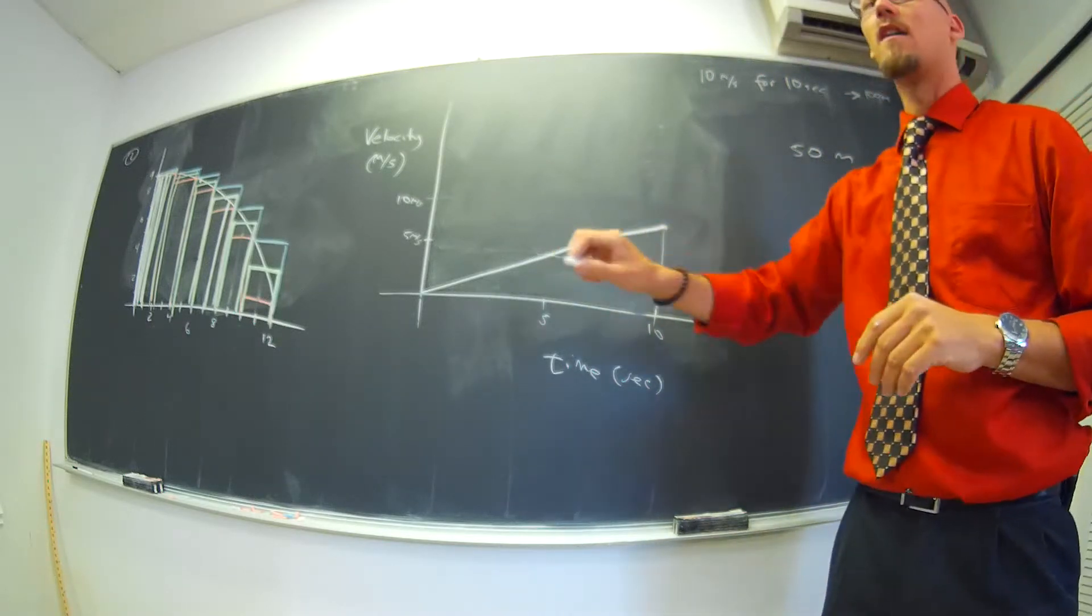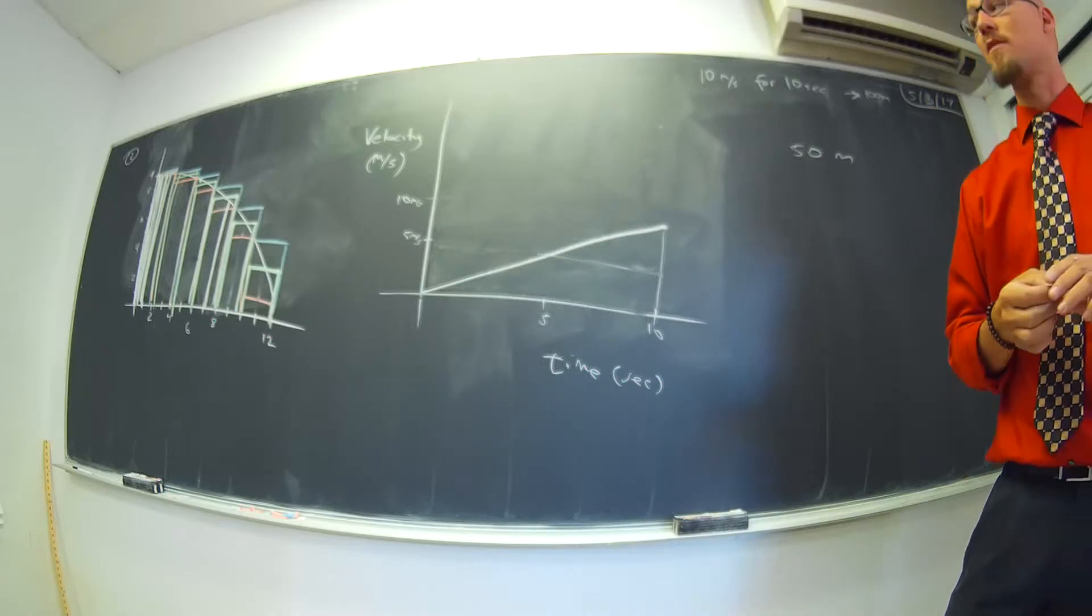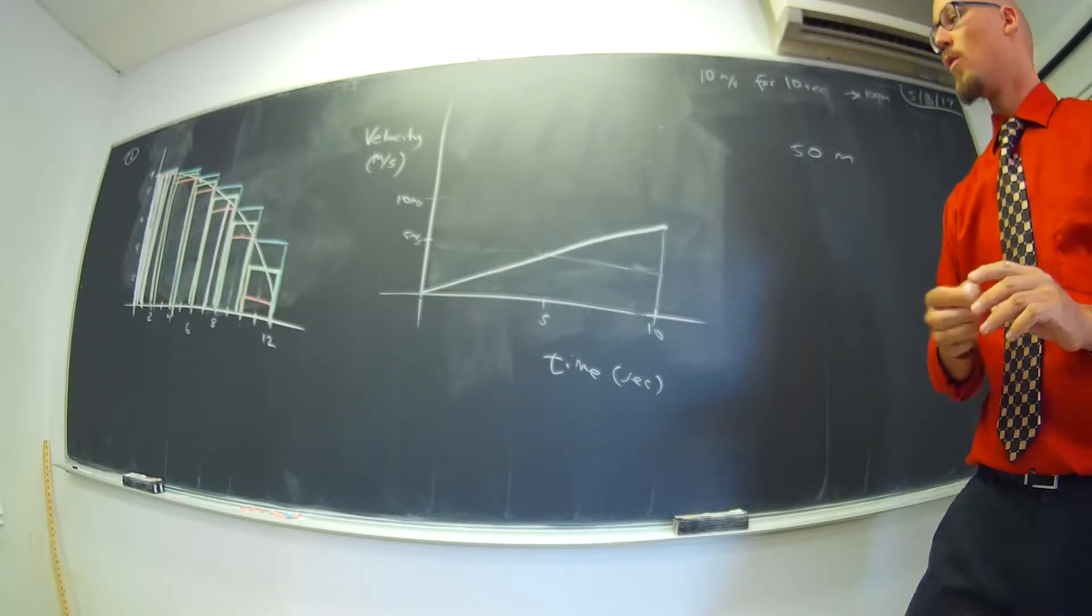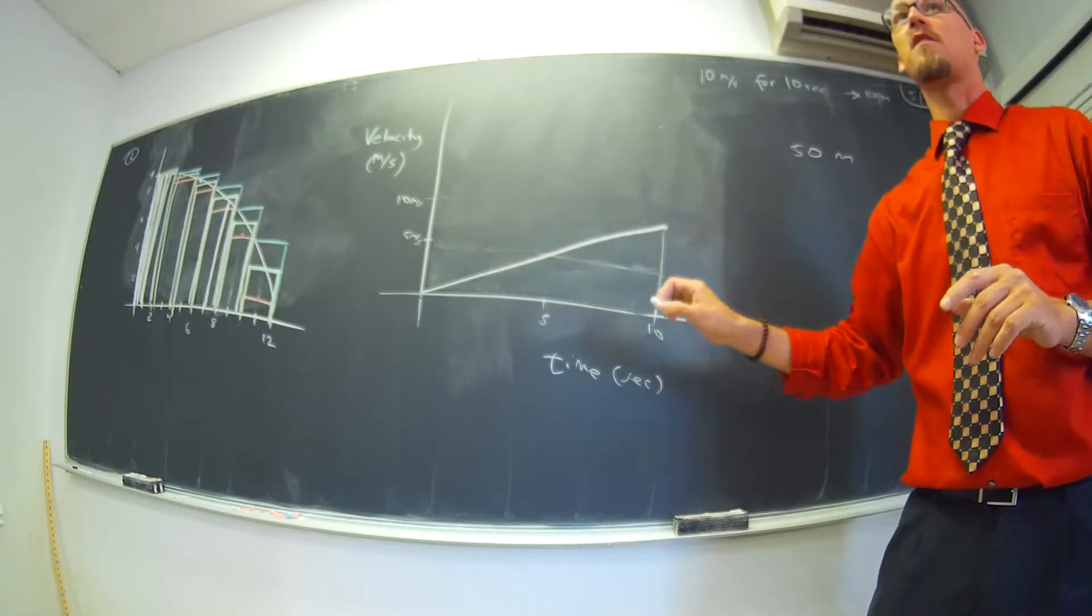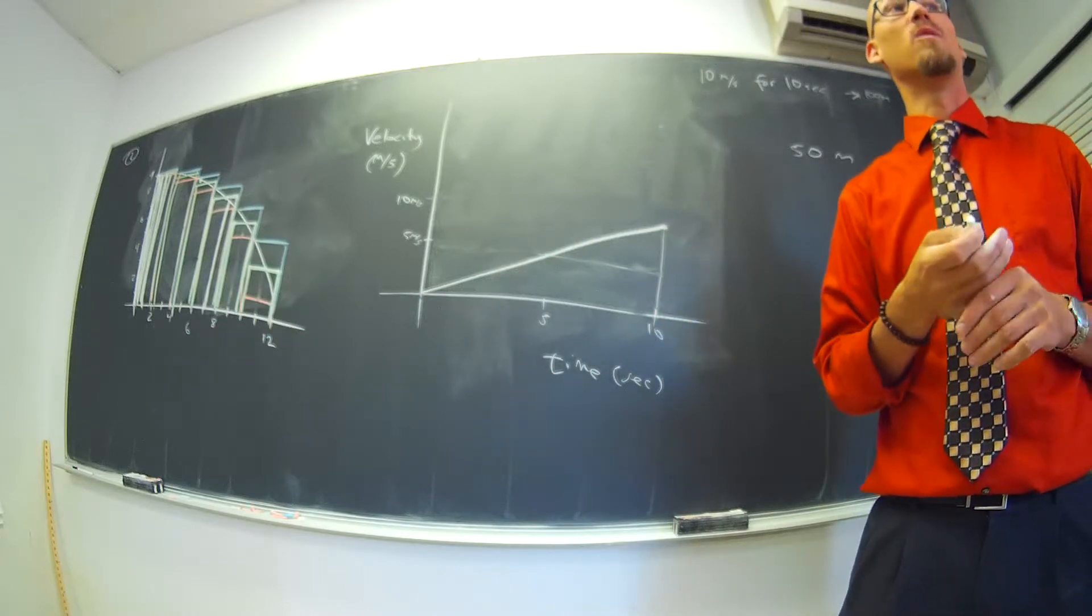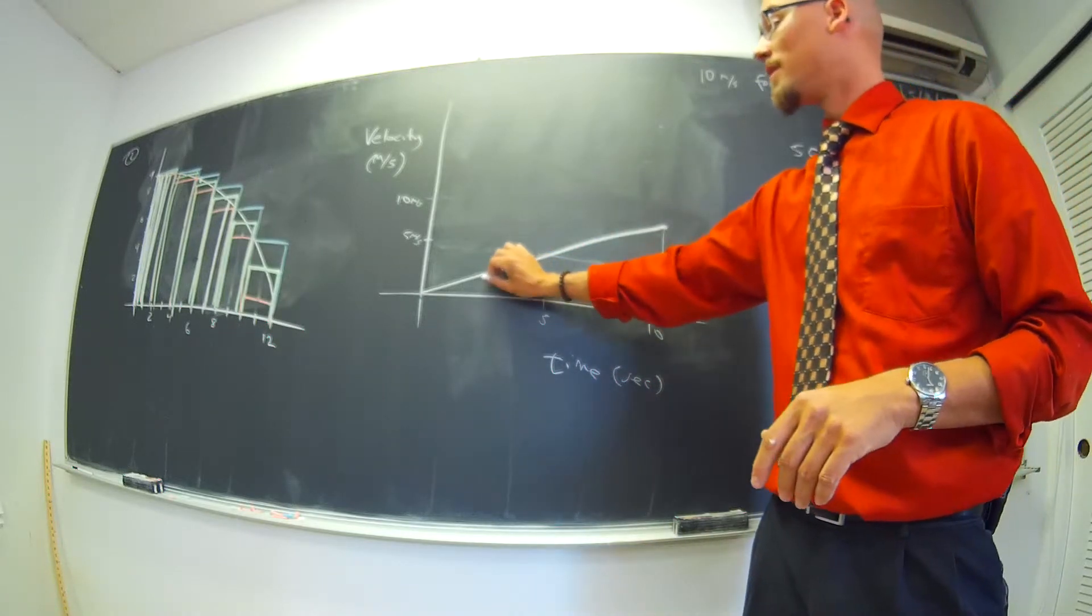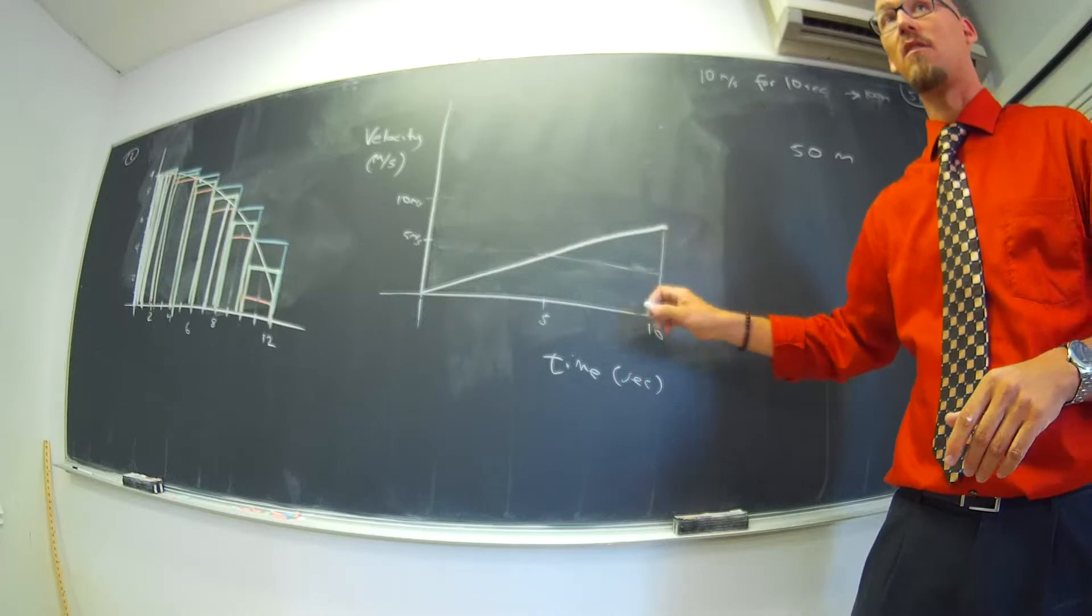But, again, it's the area under the velocity curve is the distance that you travel. It's kind of cool. So, finding the area under the curve, I'm going to start using the word integral. When you find the integral of a velocity curve, it gives you the distance.